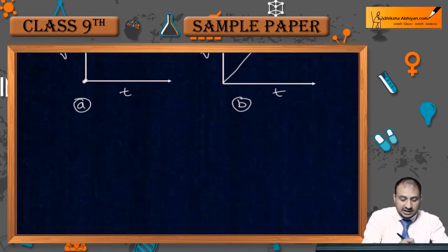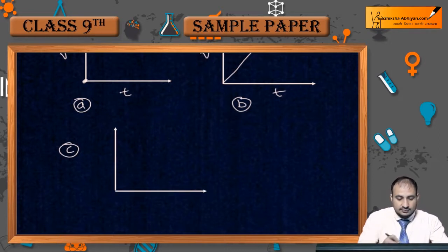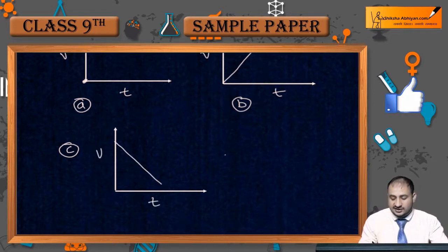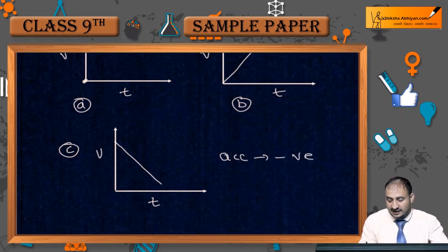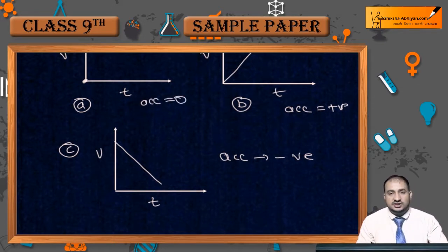Negative acceleration के लिए जो graph बनेगा, वो कुछ इस तरह का बनेगा — velocity-time graph for negative acceleration। तो यहाँ पर acceleration negative है, यहाँ पर acceleration positive है, और first वाले case में acceleration zero था।